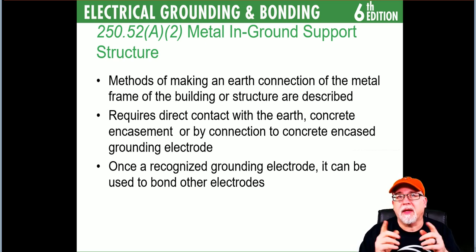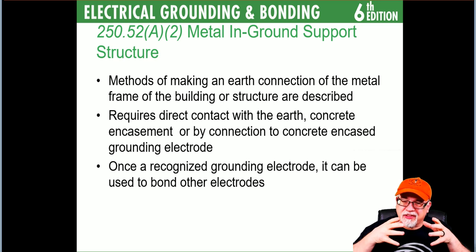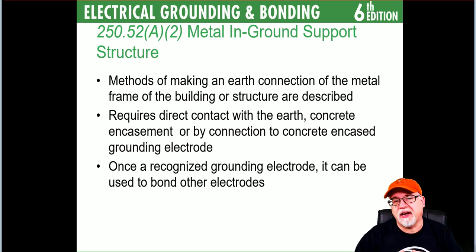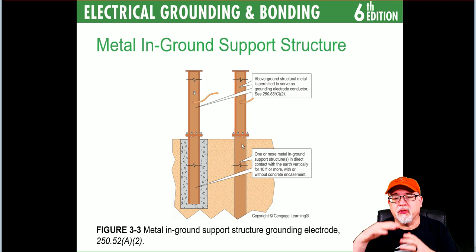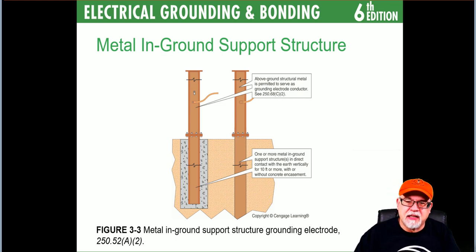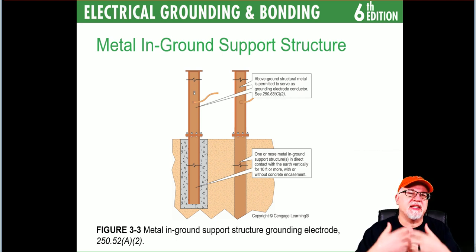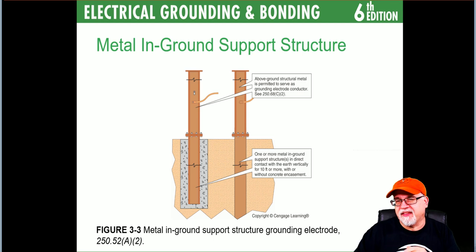This is different from the metal framing of the building — it's the in-ground structural support, actually driven into the ground as a structural support component. It can be concrete encased, and sometimes even longer when driven without concrete. That direct contact with the earth of 10 feet or more, with or without concrete encasing, is what gives it the component that makes it a grounding electrode.